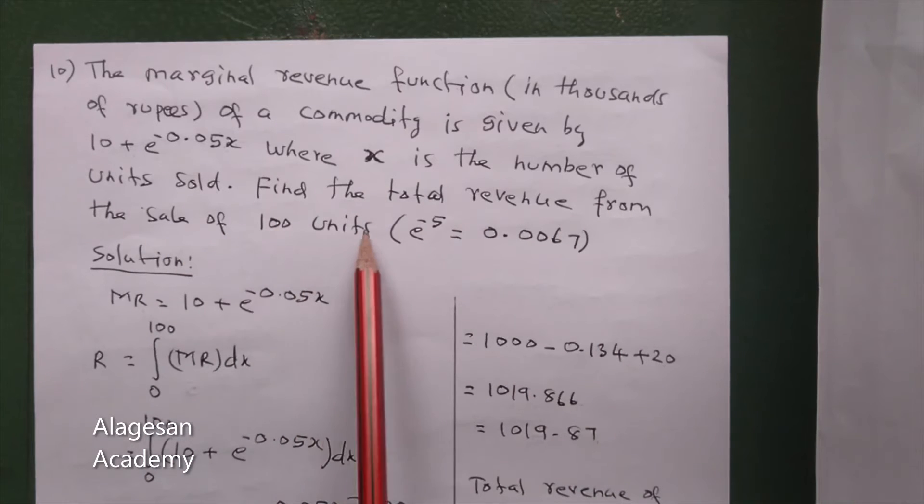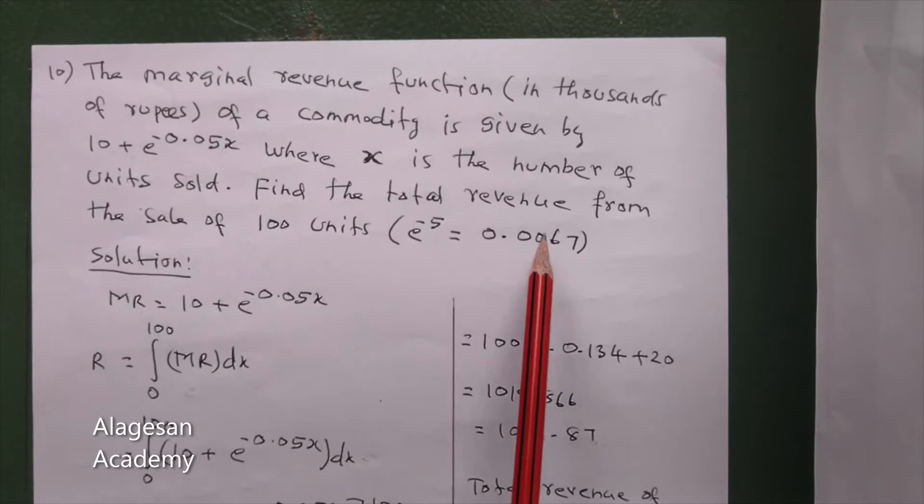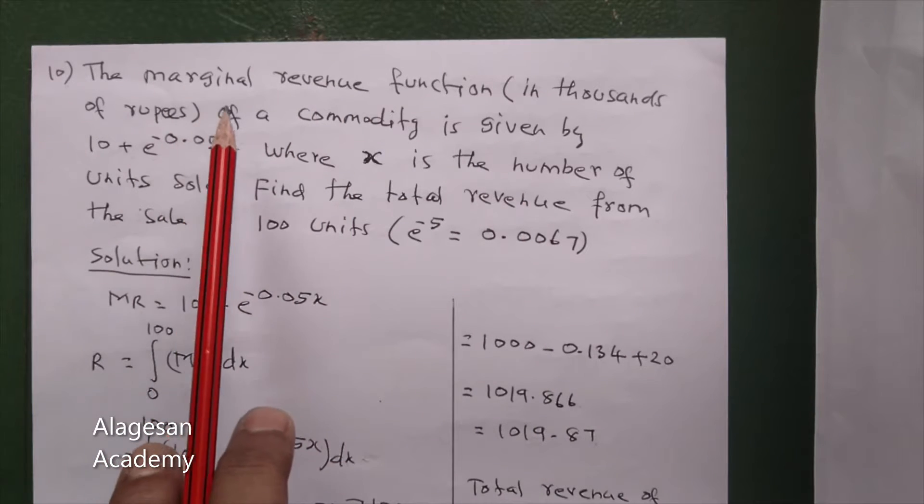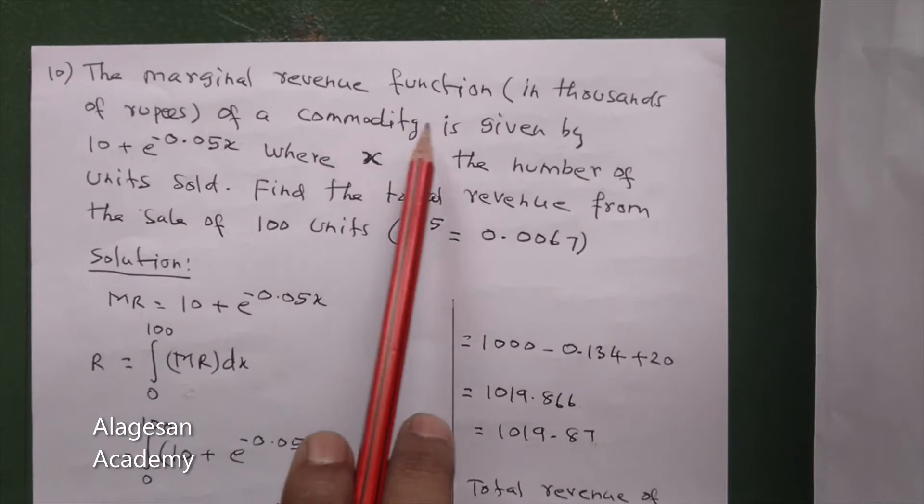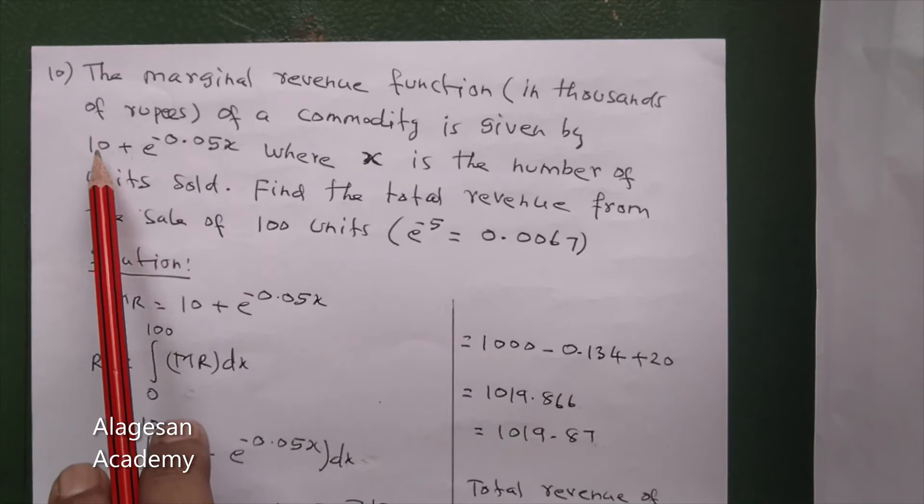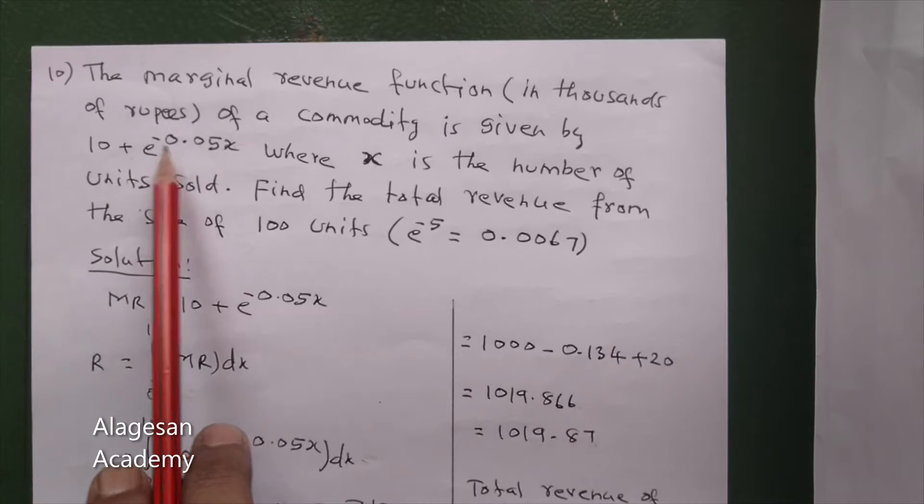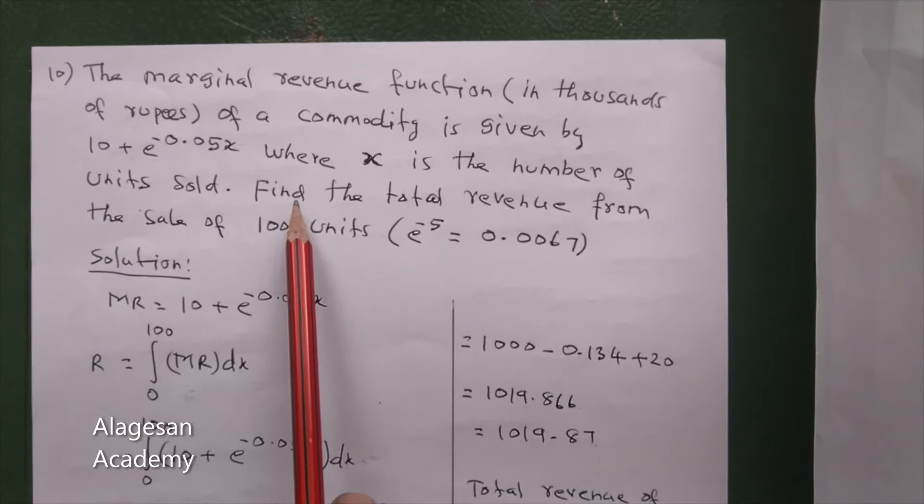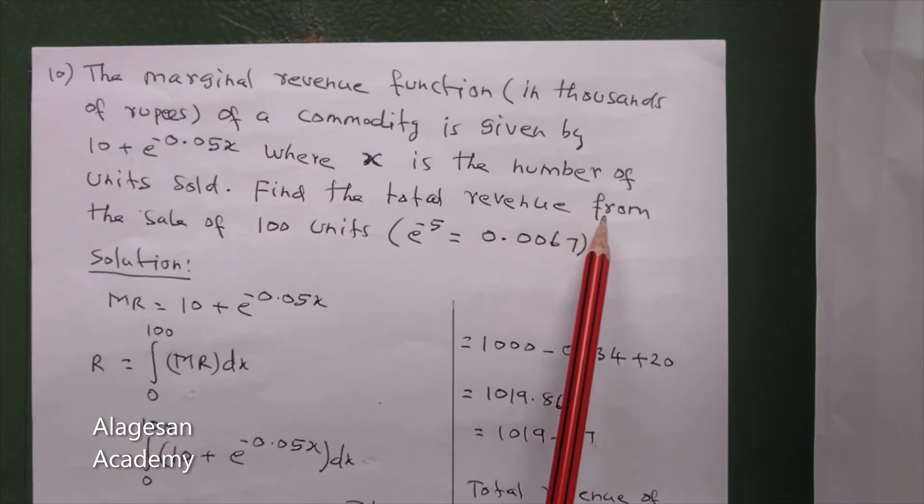What is given? Marginal revenue function of a commodity is given by this formula. So marginal revenue MR is given. We have to find the total revenue from the sale of 100 units.